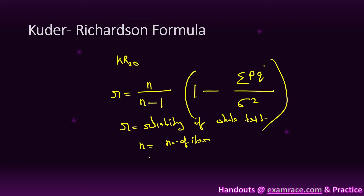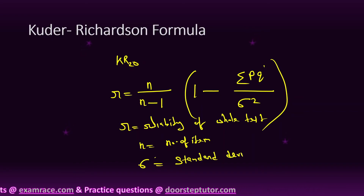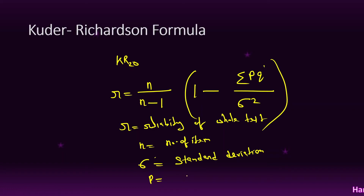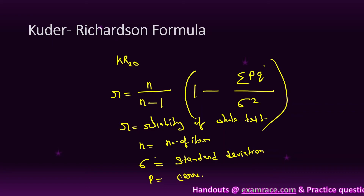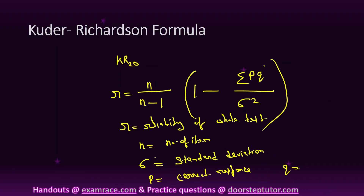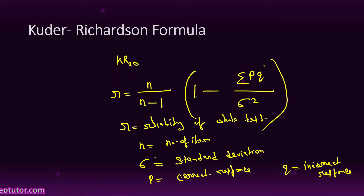Sigma is the standard deviation. p is the proportion of correct response — that is, the difficulty level. q is the proportion of incorrect response. So this is the formula of KR-20, and Kuder-Richardson is used when the item is dichotomous only.